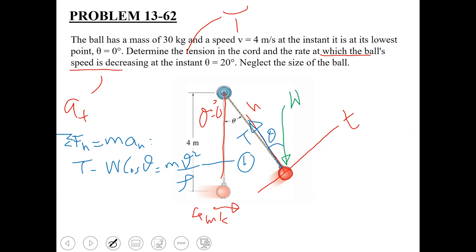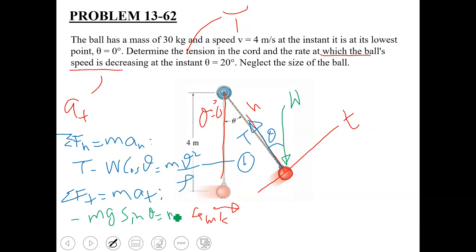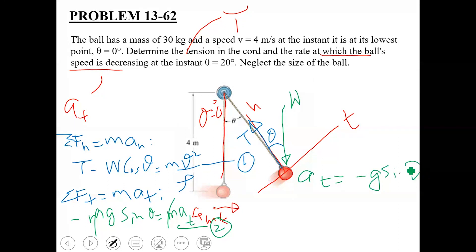Applying the equation along the tangential axis: summation Ft equals m·at. The force acting along the tangential axis is minus mg·sinθ, so: minus mg·sinθ equals m·at. Cancelling m from both sides gives us at equals minus g·sinθ. This is equation number two. Since at is a function of theta, it is not constant.